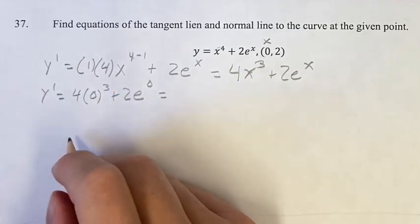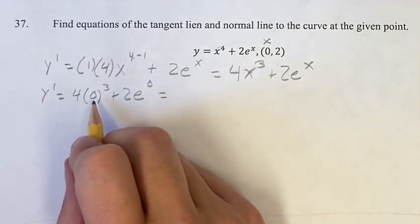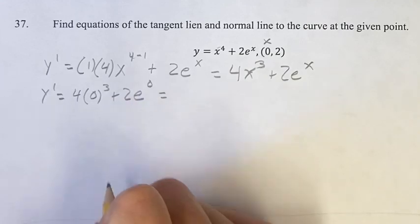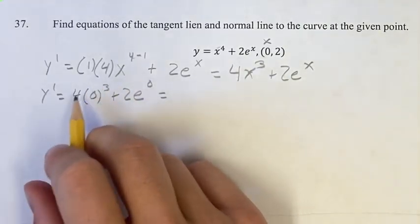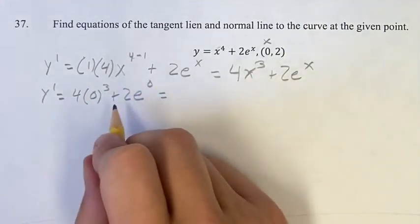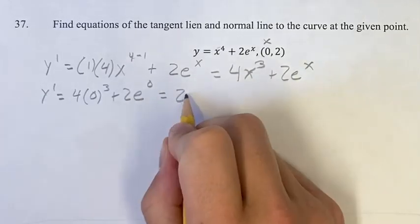0 cubed is just 0, 4 times 0 is just 0, so this whole term is just 0, we're adding it so we can just ignore it. So 0 plus this, which is 2 times e to the 0, which is 1.